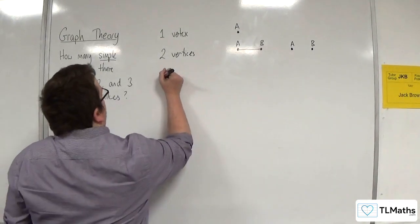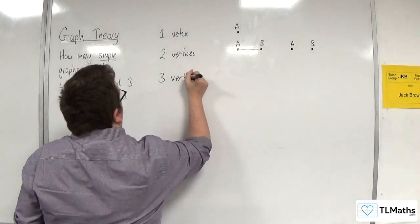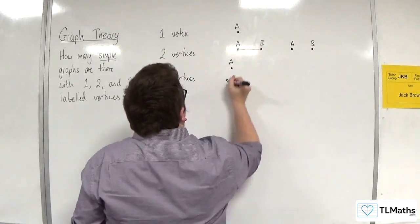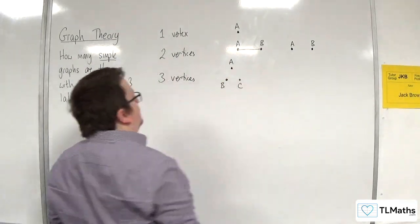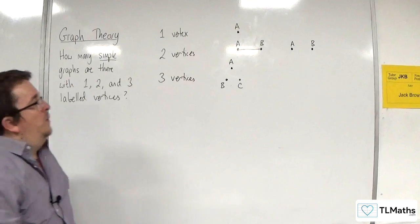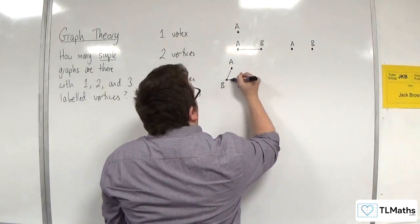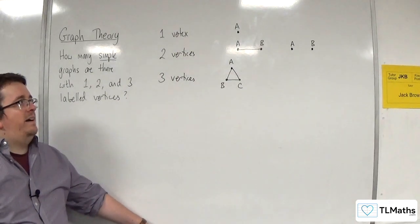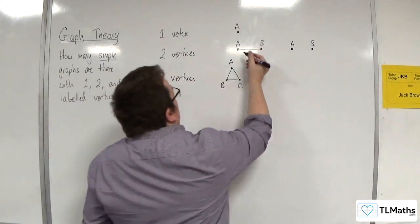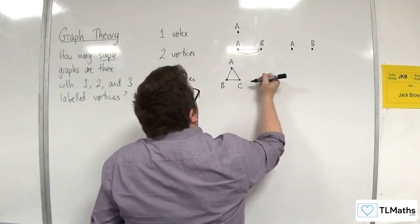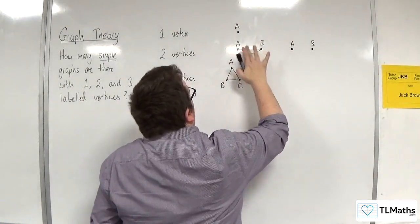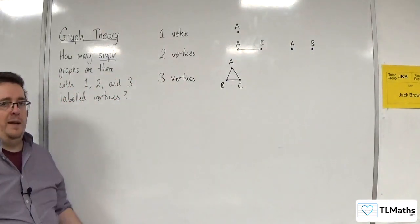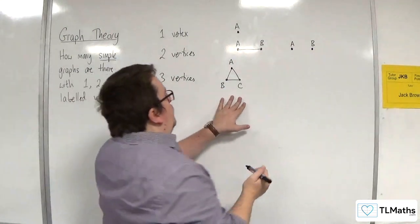How about three vertices? So, here we've got A, B, and C. We could have them all connected to one another, like that. And, of course, remember, we can't have multiple edges. So, we couldn't have had that, for example, because the graph needs to be simple. Simple means no loops, no multiple edges. So, that's one option.